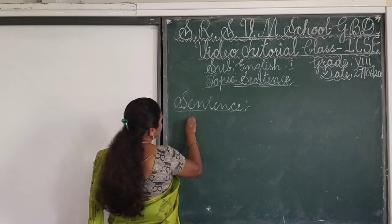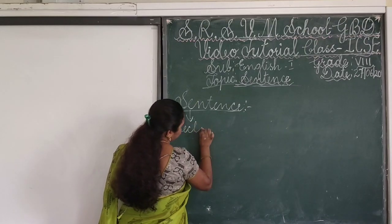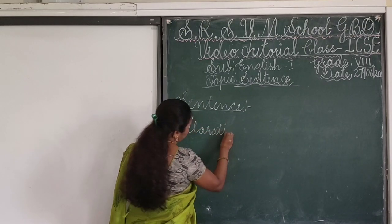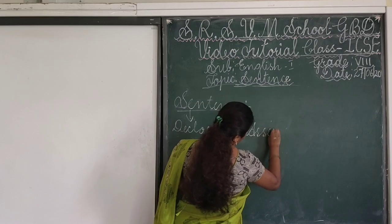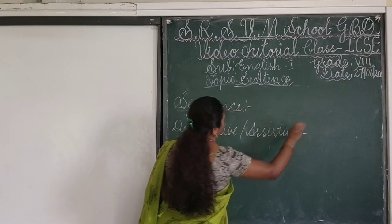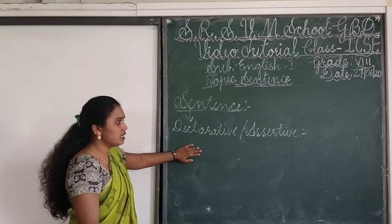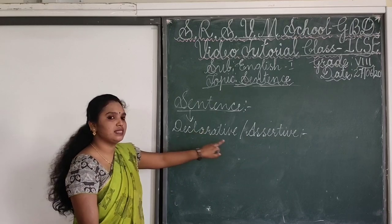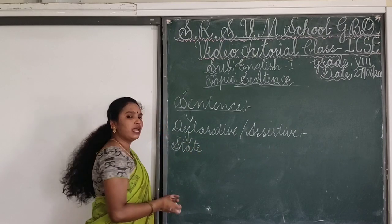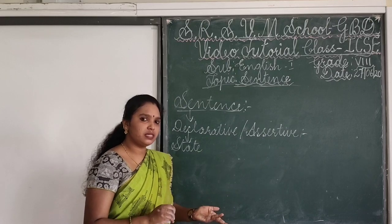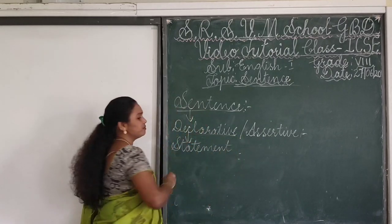So, we have kinds of sentences. The first one is declarative or assertive. A declarative or assertive sentence is where we find just a statement. A declarative or assertive sentence means a statement — it means a statement. It can be either a simple statement, a positive statement, or a negative statement.